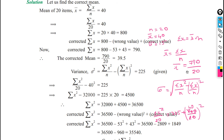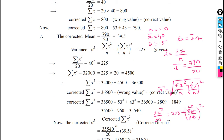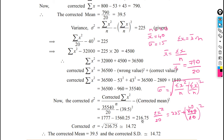Now the new sigma x squared is 35,540. New sigma x is 790 and n is 20. The corrected standard deviation sigma equals square root of 35,540 divided by 20, minus 790 divided by 20 whole square. Solving gives sigma squared equals 216.75, so sigma equals square root of 216.75, which is approximately 14.72.